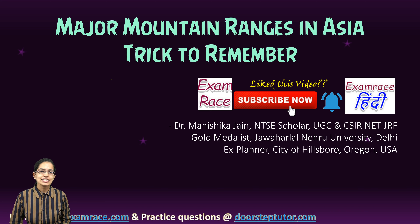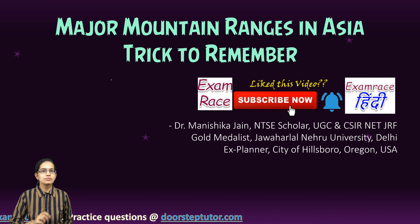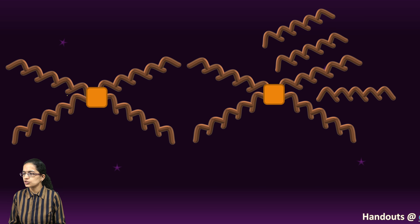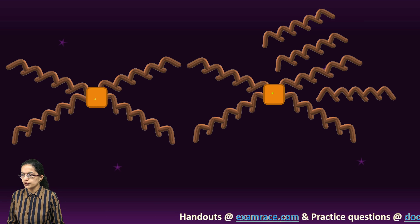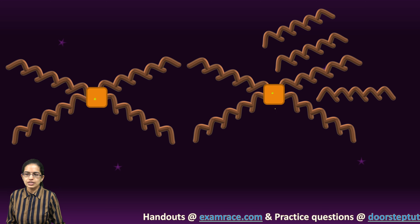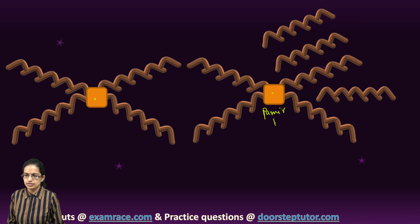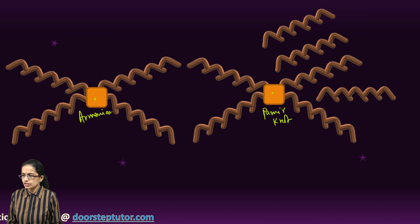Let's have a very easy trick to remember some of the major mountain ranges in Asia. What we do is we draw 2X, as you can see in the diagram here, and then we have the center of the 2X. The first center is what is known as the Pamir knot and the second center is what is known as the Armenian knot. So we have the 2 knots.